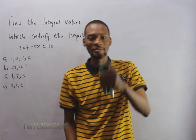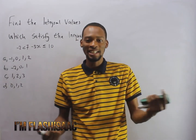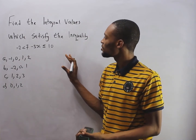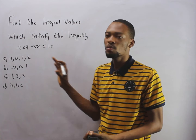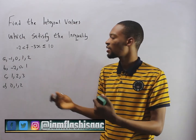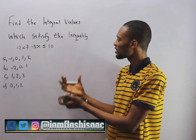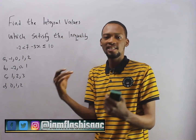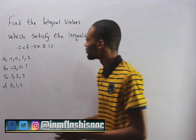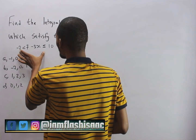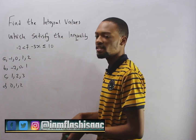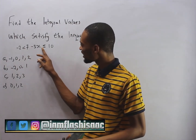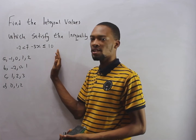Hello guys, I am Flash Isaac. Let's take a look at this question: find the integral values which satisfy the inequality. This means we need to solve the inequality and get the range of values. It has two inequality signs: minus two is lesser than seven minus three s, and it's lesser than or equal to ten.